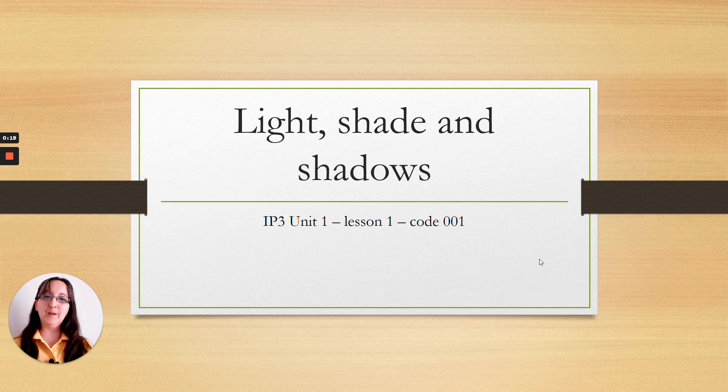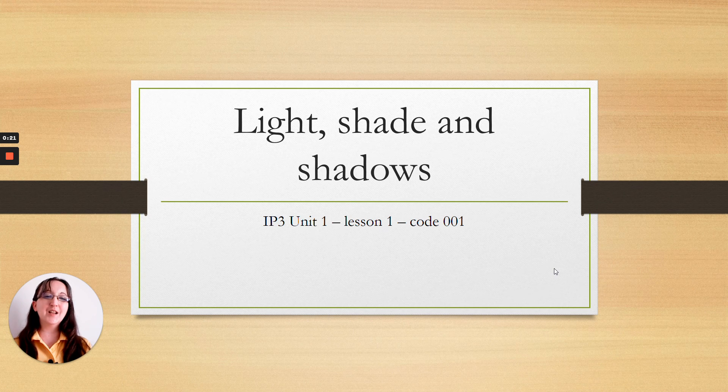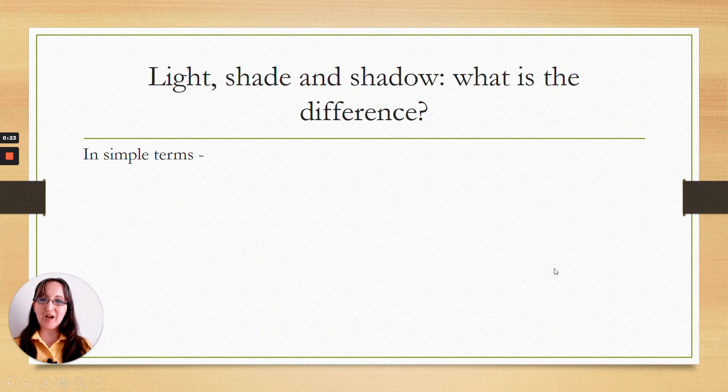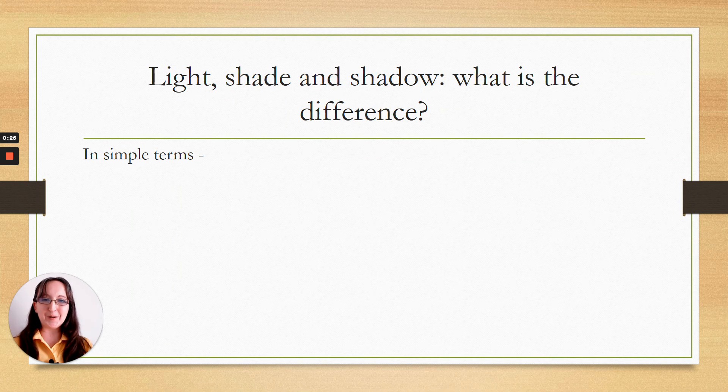So our first unit is light, shade and shadow. But what is the difference between all of them?